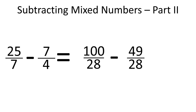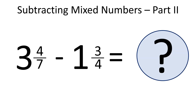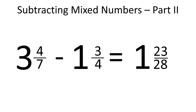Now we can subtract the numerators: 100 minus 49 is 51. So we have 51 over 28, which is an improper fraction, or 1 and 23 over 28 in its simplest form. So 3 and 4 over 7 minus 1 and 3 over 4 equals 1 and 23 over 28.